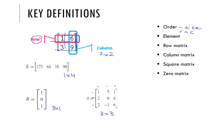Each of the values inside a matrix is known as an element. If we're talking about a particular element we give it a row and column reference. So the value 64 in matrix K is in row one, column two. Similarly, in matrix A, the number four is in row two, column three.